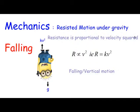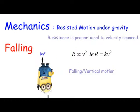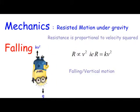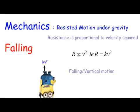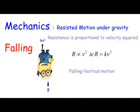So today we're looking at the falling case going down. That's a positive direction, positive directions downwards, and the resistance you can see is kV squared, so it's proportional to the square of the velocity.